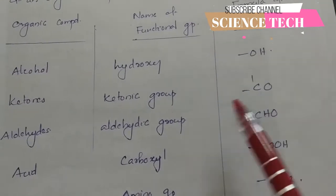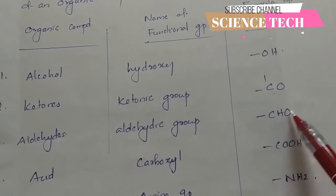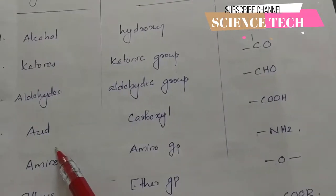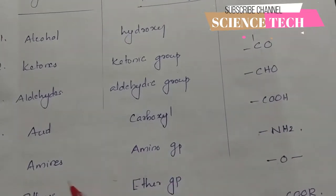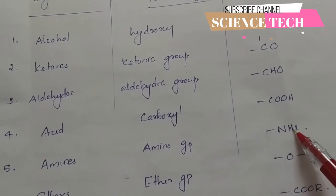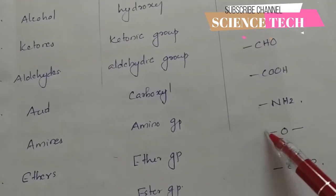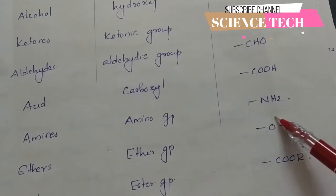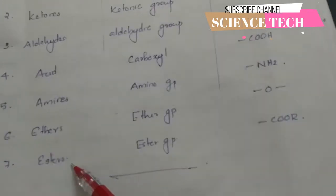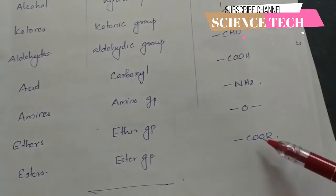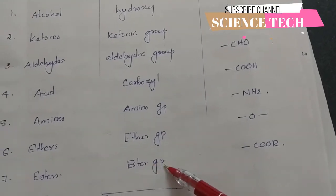For ketones, the functional group is C=O, called the ketonic group. For aldehydes, it is CHO, called the aldehyde group. For acids, it is COOH, called the carboxyl group. For amines, it is NH2, called the amino group. For ethers, the two groups are separated by oxygen, called the ether group. For esters, the group is represented as RCOOR', called the ester group.